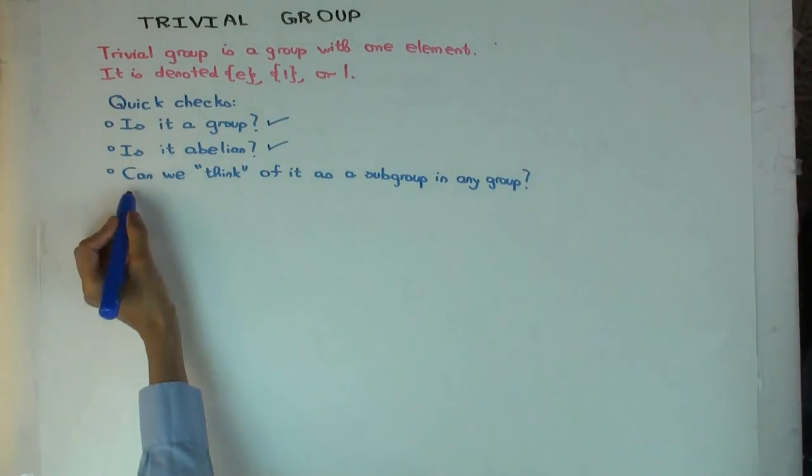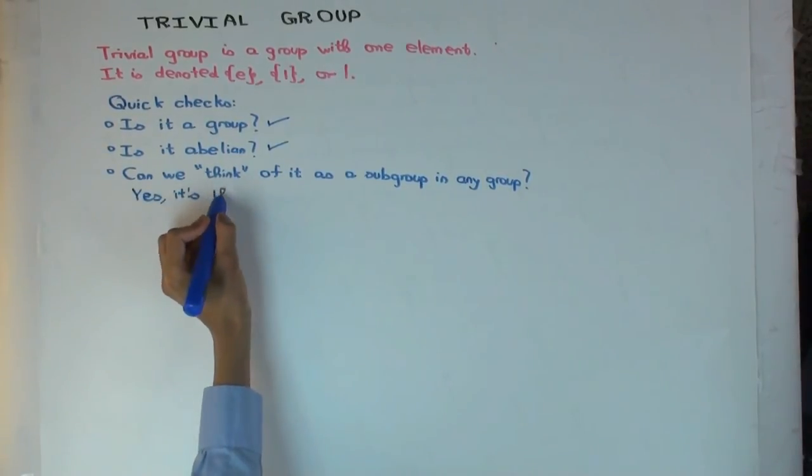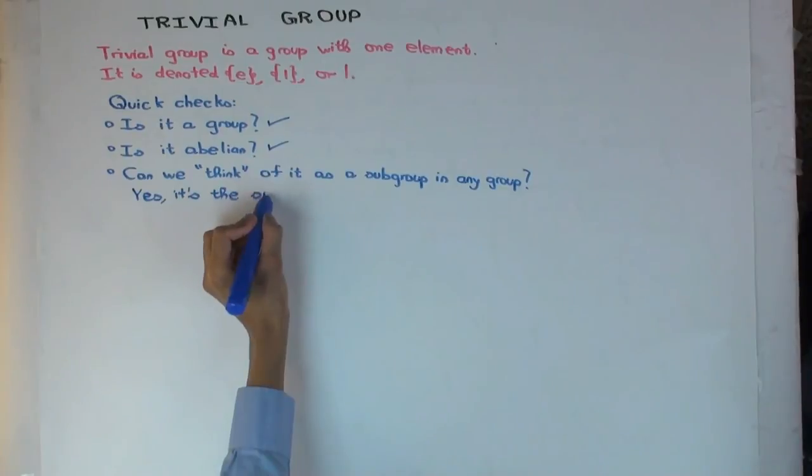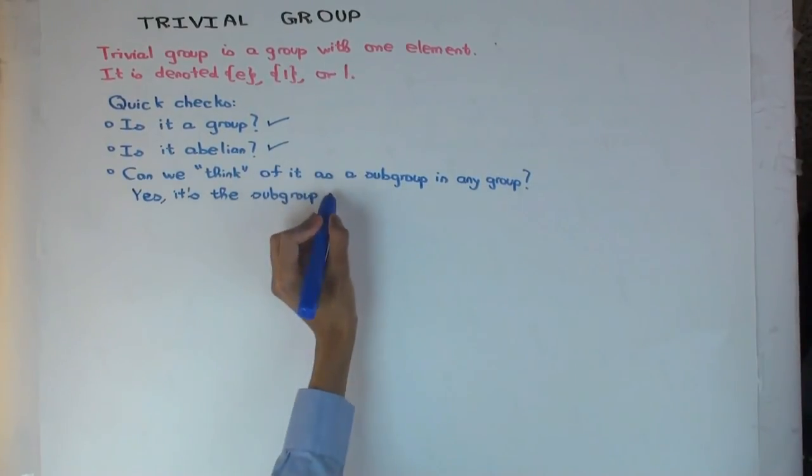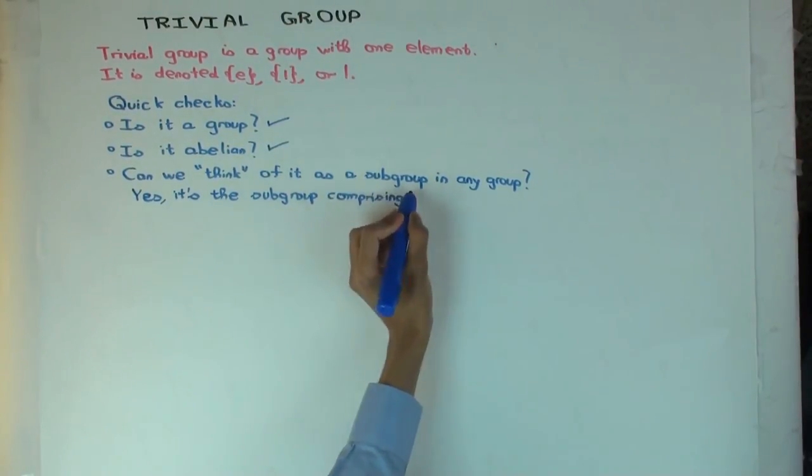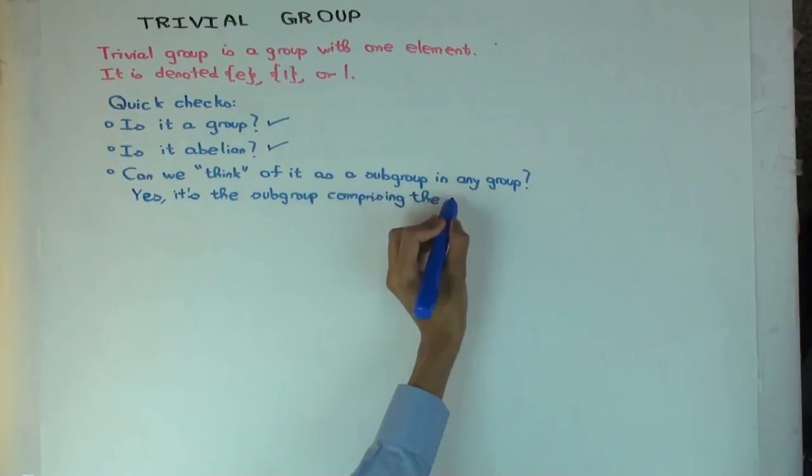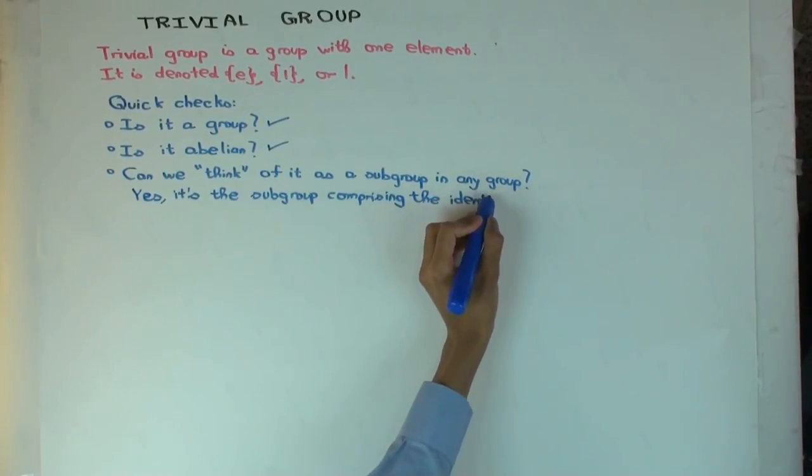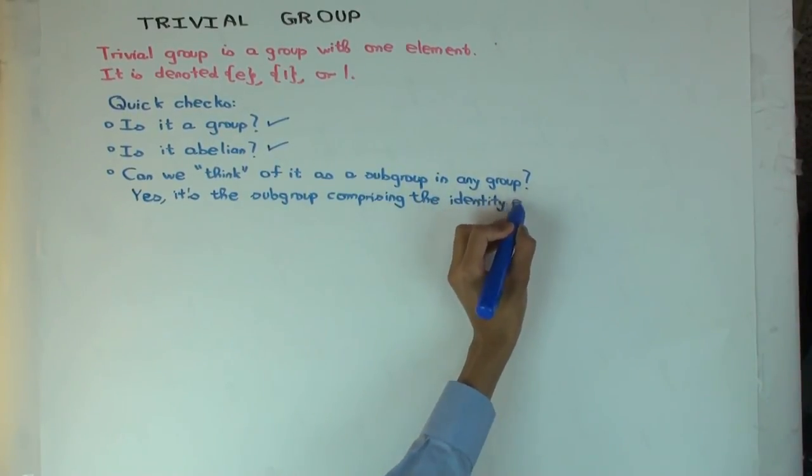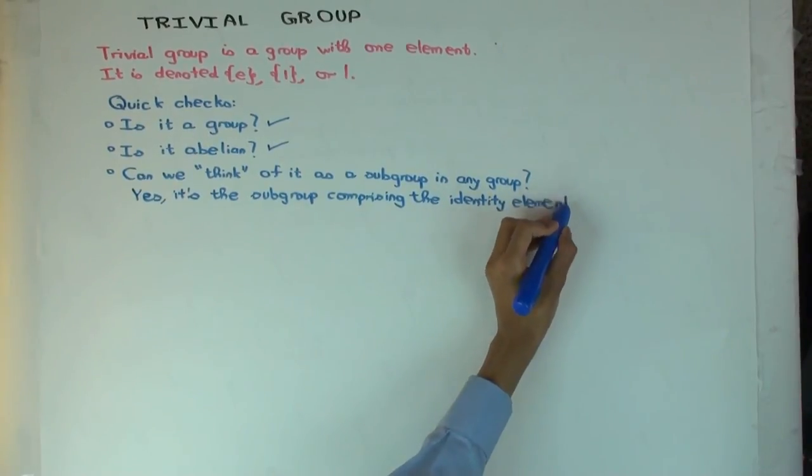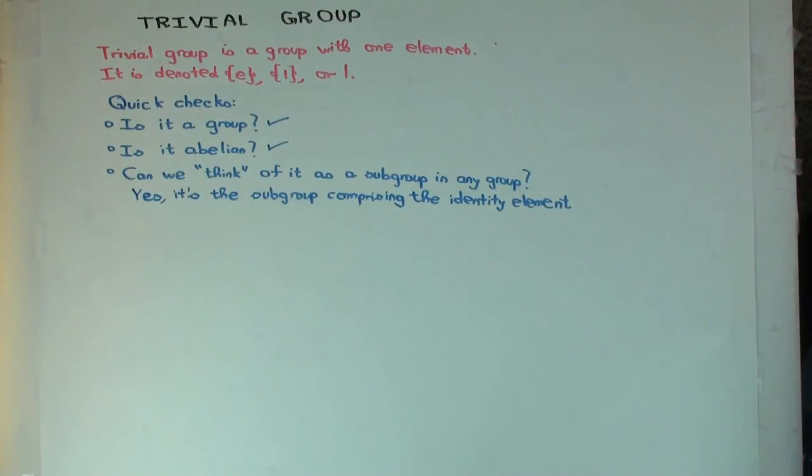Yes, it's the subgroup comprising the identity element. So this is actually our first example of a group which is finite - it has only finitely many elements. All the other examples we've taken, like Z, Q, are huge, they're infinite. This is our first example of a finite one. Non-trivial finite groups are a little trickier to construct, and we'll see them later.